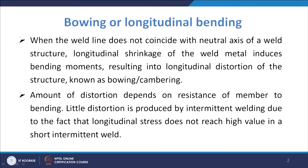Coming to bowing, also known as longitudinal bending: this occurs when the weld line does not coincide with the neutral axis of the weld structure. Longitudinal shrinkage of the weld metal induces bending moments. The longitudinal stress that is present induces a bending moment, and that results in the longitudinal distortion of the structure, also known as cambering or bowing.